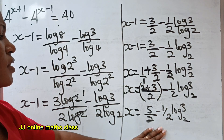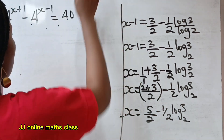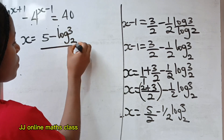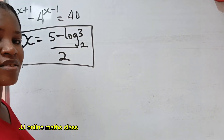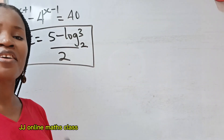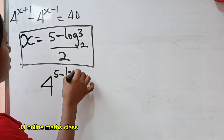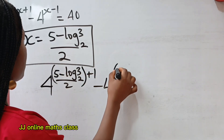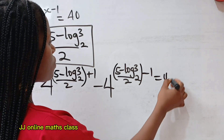They share the same denominator, so we can write x is equal to (5 minus log 3 base 2) divided by 2. This becomes the value of our x. Now let us prove that the answer we got is correct — this is the most interesting aspect of this video. Let's substitute it into the original expression. We have 4 to the power of (5 minus log 3 base 2)/2, plus 1, minus 4 to the power of (5 minus log 3 base 2)/2 minus 1, is equal to 40.